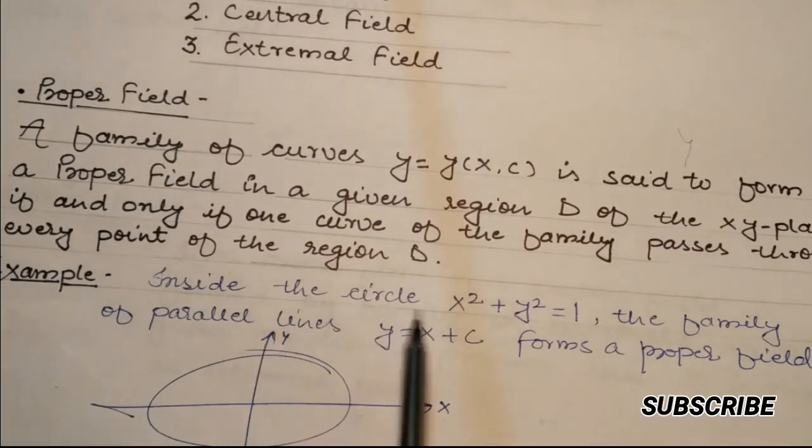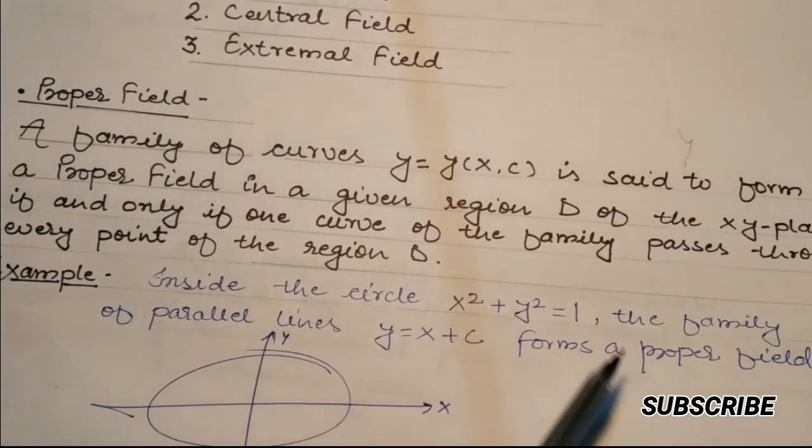Inside the circle x² + y² = 1, the family of parallel lines y = x + c forms a proper field. Look, this is the circle, and this is y = x + c. These curves will cover all points inside, so this field is a proper field.